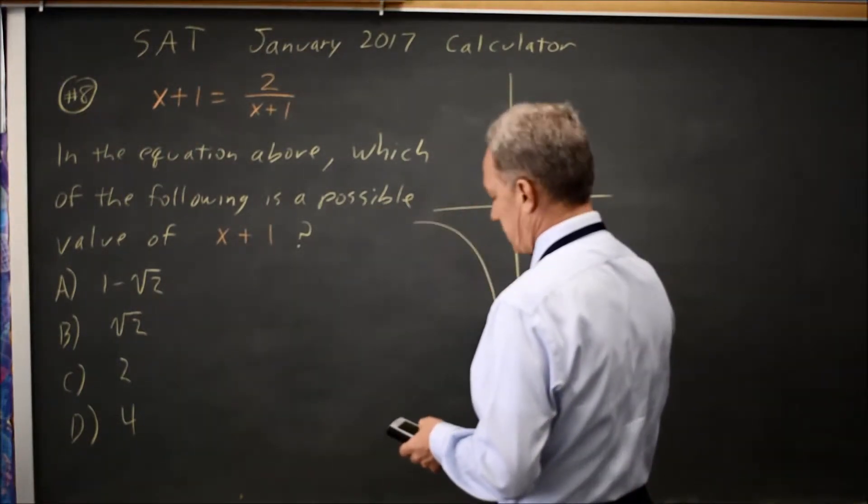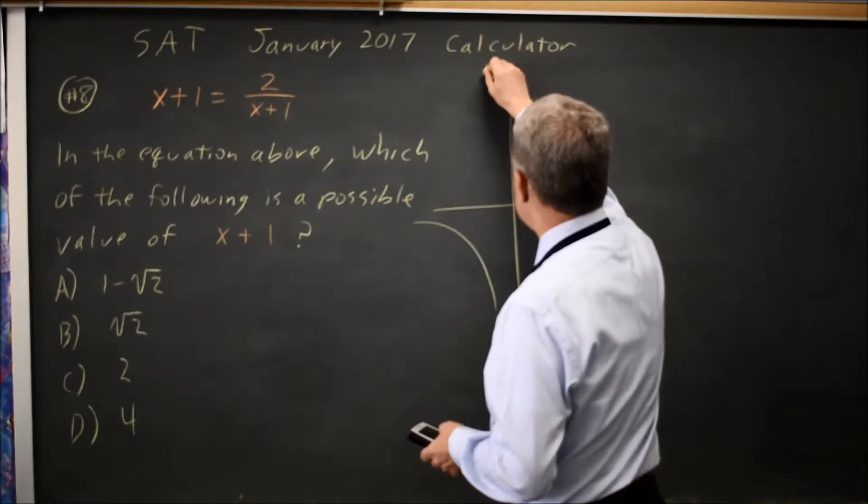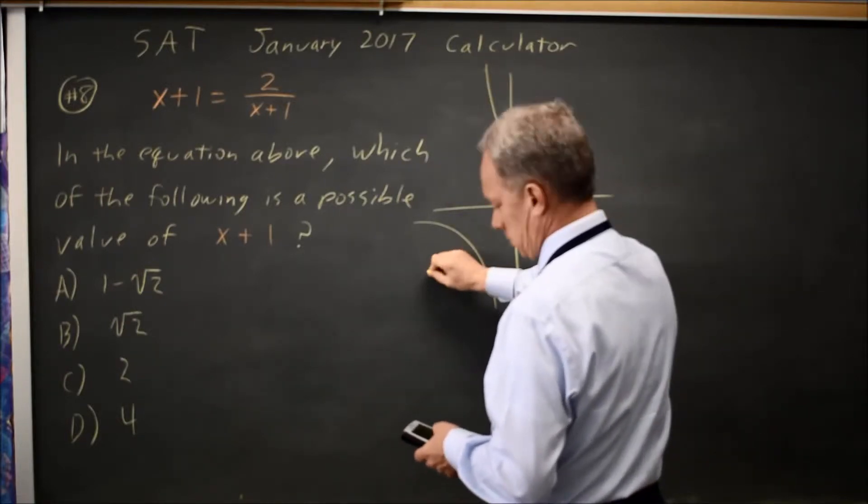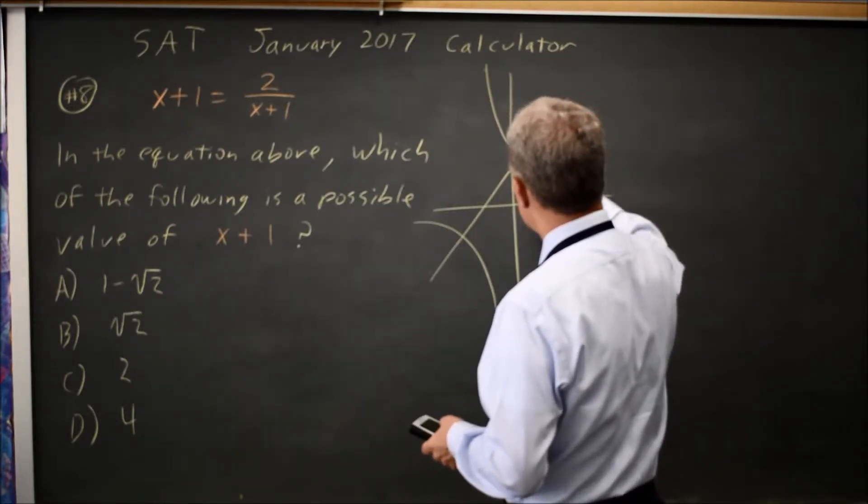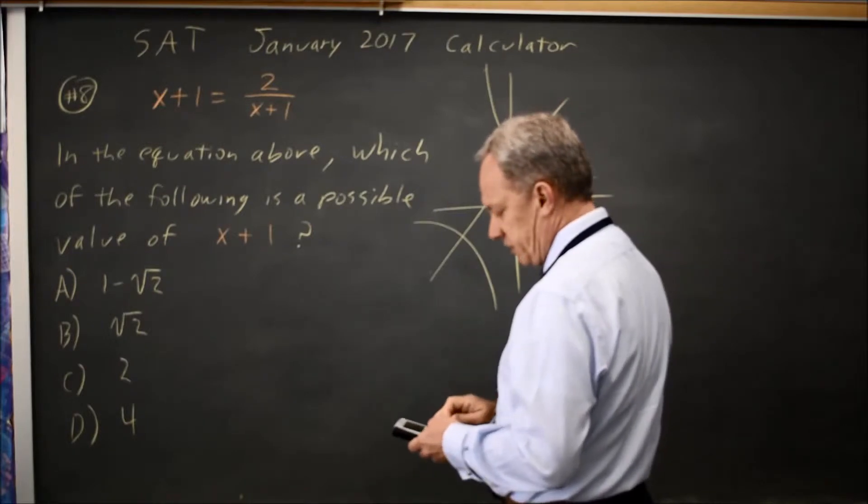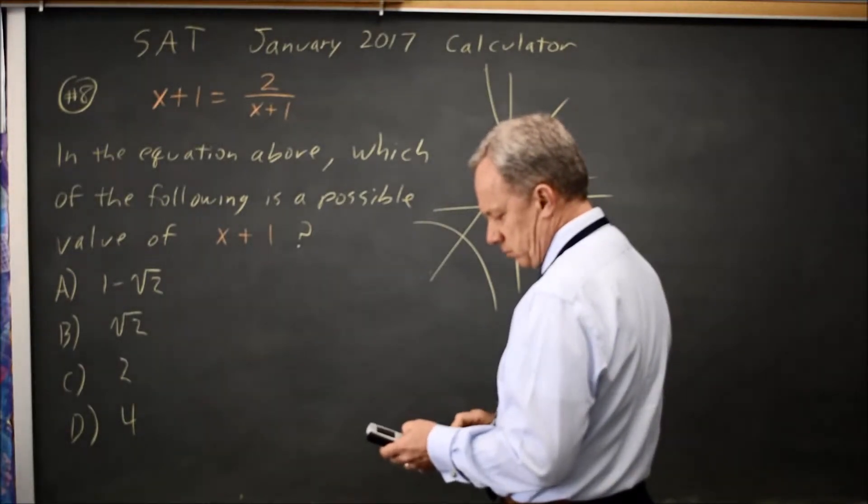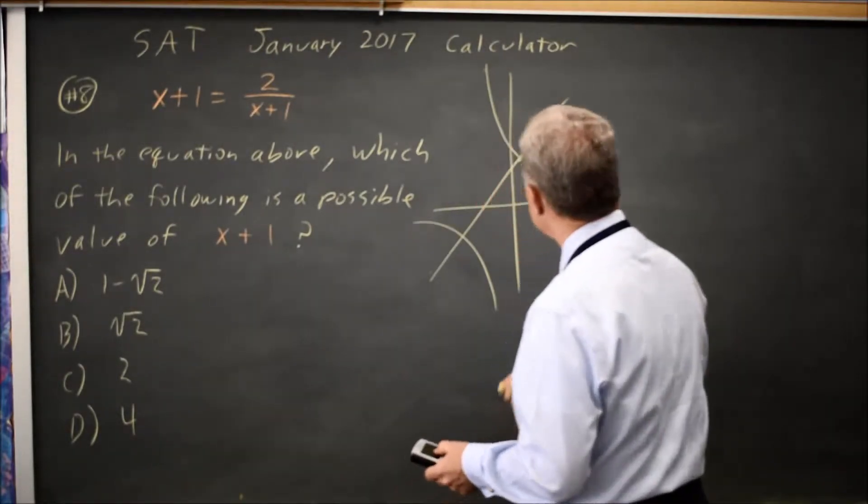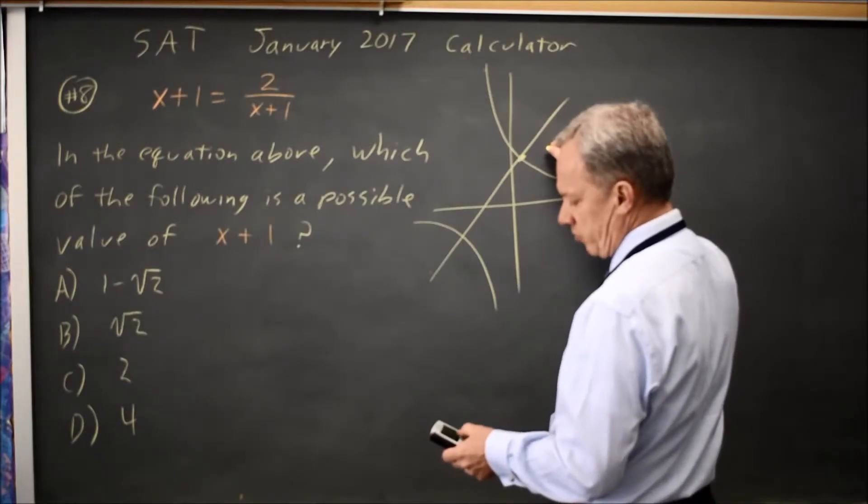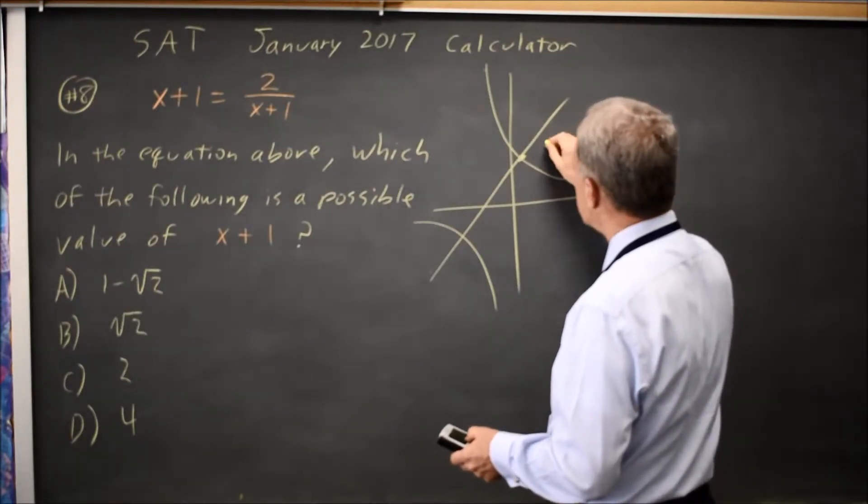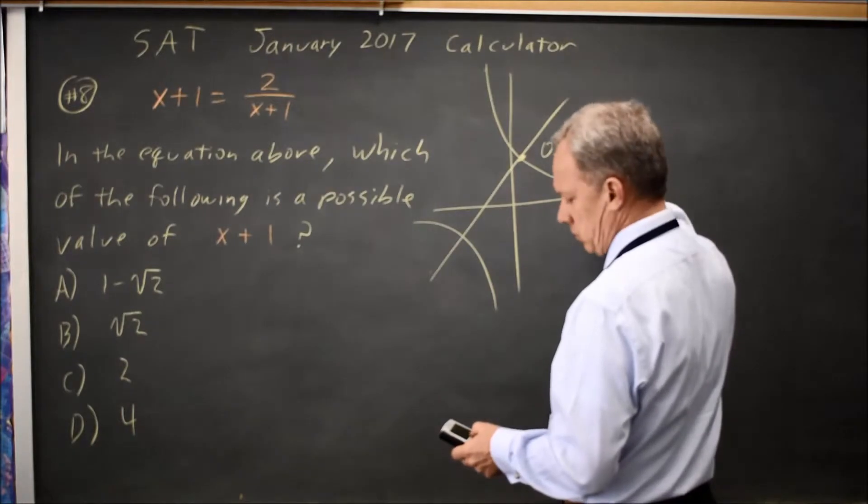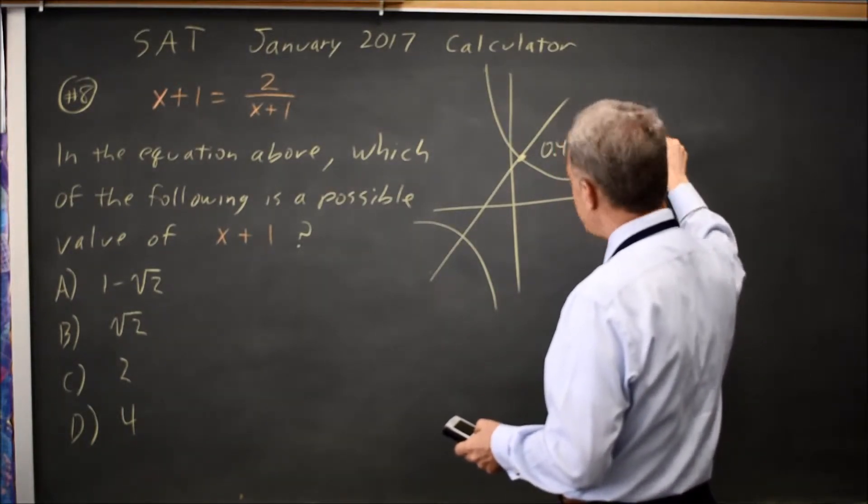The graph looks something like this, with a point of intersection here at x equals 0.414, y equals 1.414.